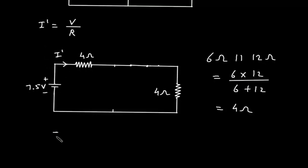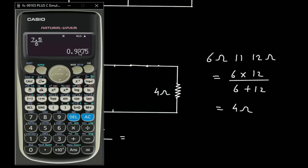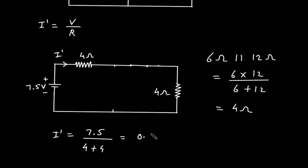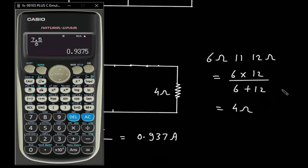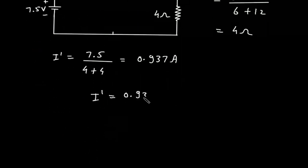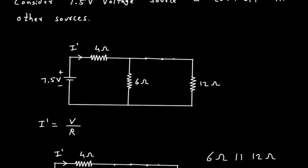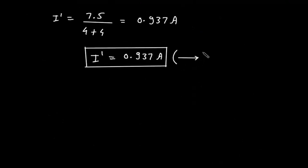Now I prime equals V divided by R. V is 7.5V divided by R. Here we can see this 4 Ohm is in series with the other 4 Ohm, so this will be 4 plus 4, giving 7.5 divided by 8, which equals 0.937 Ampere. So I prime is equal to 0.937 Ampere and the direction for I prime is rightward.